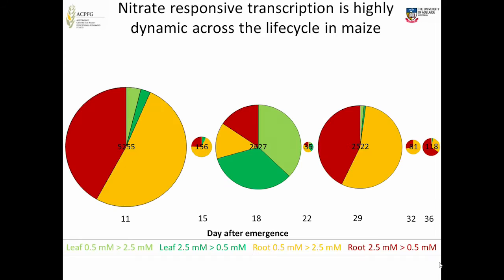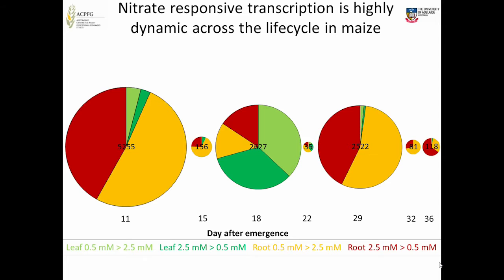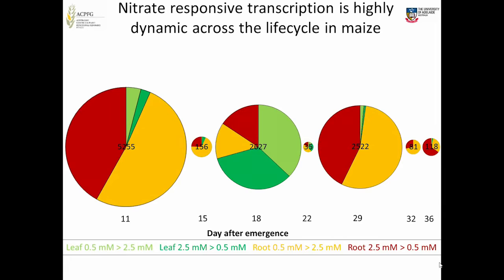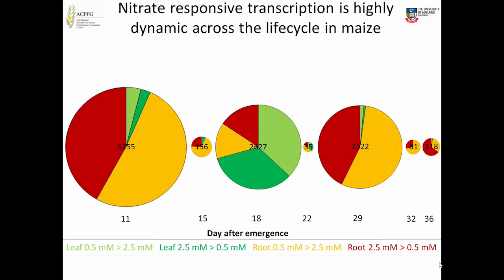The size of the balls represents the total number of nitrate-responsive probe sets. At day 11, day 18, and day 29, there were major transcriptional events. At other time points, there was a limited response. Days 11 and 29 were dominated by root differential probe sets, while day 18 was dominated by shoot processes. In terms of gene types: day 11 was dominated by transcription regulation, day 18 by ribosome processes, and day 29 by nitrogen metabolism.